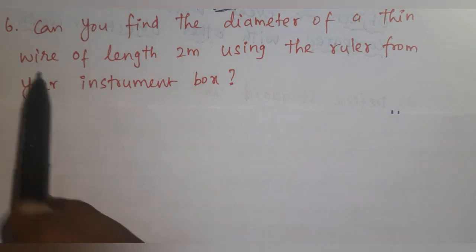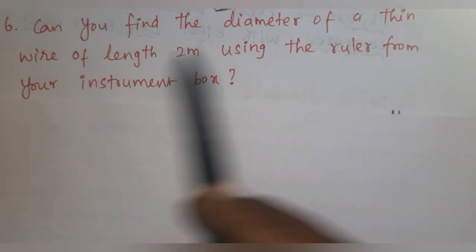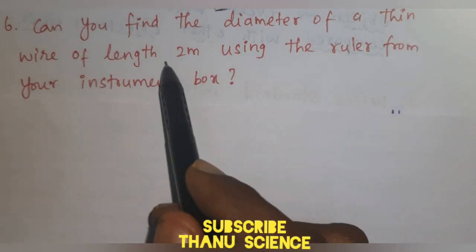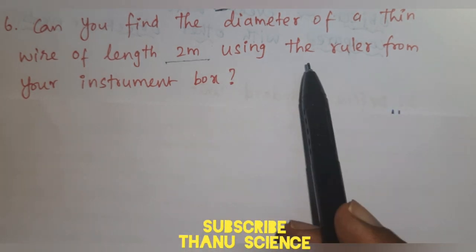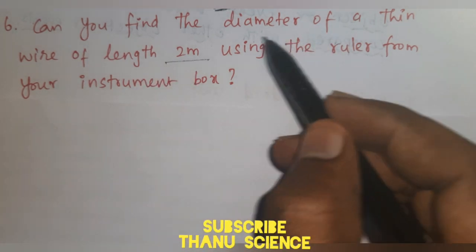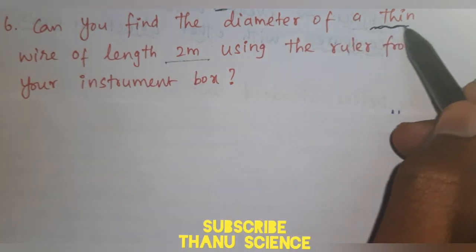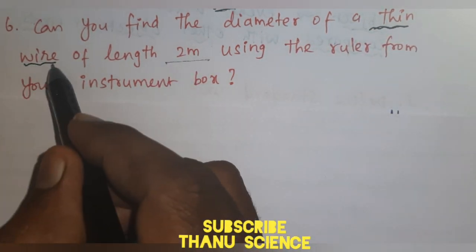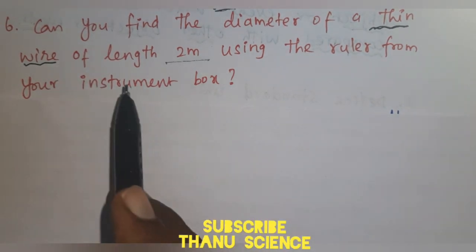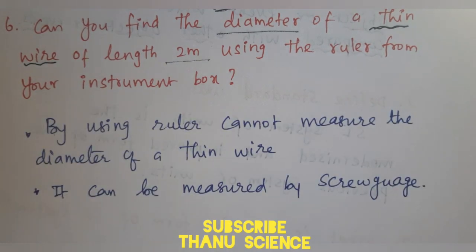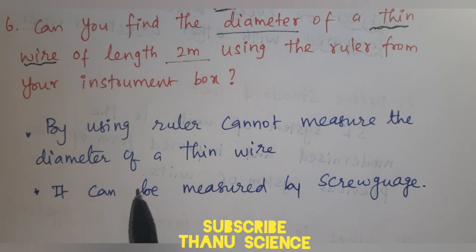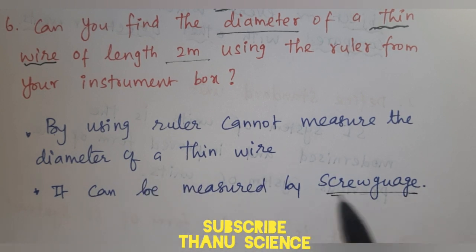Question number 6: can you find the diameter of a thin wire of length 2 meters using the ruler from your instrument box? By using a ruler, we cannot measure the diameter of a thin wire. It can be measured using a screw gauge.